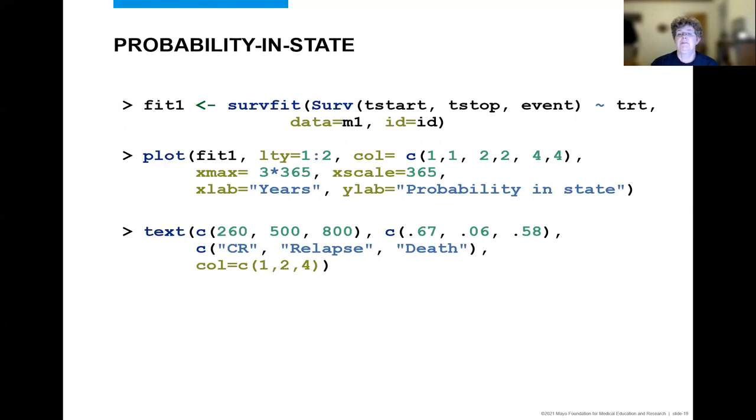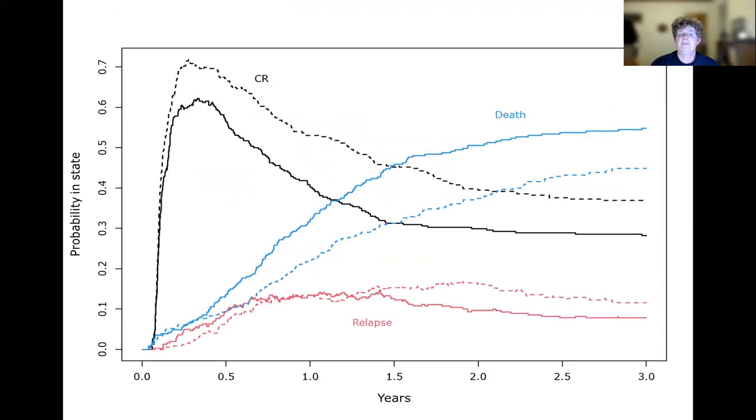In order to create probability and state curves, you just need to call the familiar ServFID function. Again, remember that the major difference is that there must be an ID statement and the event must be a factor. The default plot shows all of the states except the initial one, though you can specify that you want to see that one too. One of the major differences about these curves is that they can go up and down as subjects move in and out of various states. They indicate the probability of being in each state by time. And here the solid line is treatment A and the plot shows that those subjects are more likely to be in the death state and are less likely to be in the complete recovery state than those in subjects in treatment B.